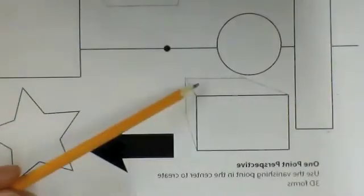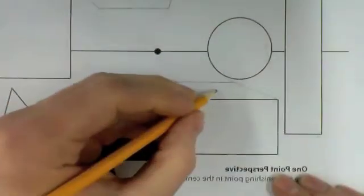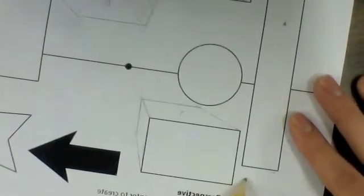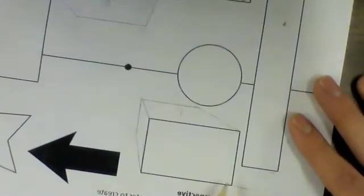The square is complete. Notice you'll see the top of it because it's below the horizon line whereas the one before you could see the bottom because it was above the horizon line.